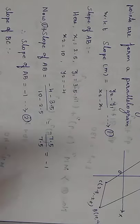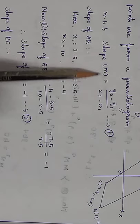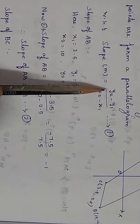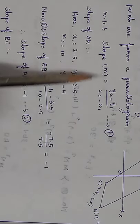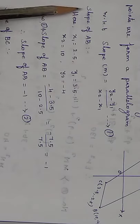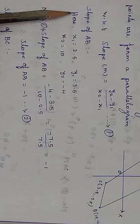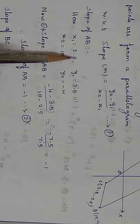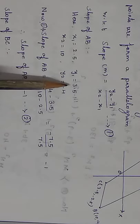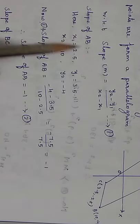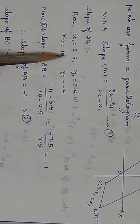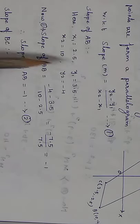We know that slope m is equal to (y2 minus y1) divided by (x2 minus x1) — equation 1. Slope of AB: here x1 is equal to 2.5, y1 is equal to 3.5, x2 is equal to 10, y2 is equal to minus 4. The first point is A, the second point is B. These are x1, y1, x2, y2.